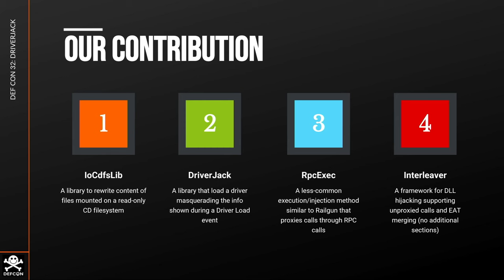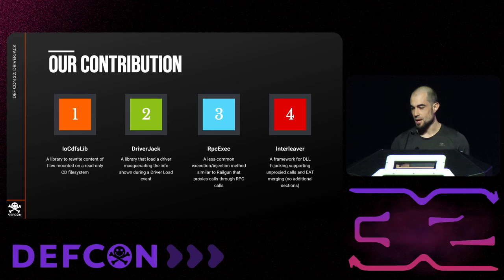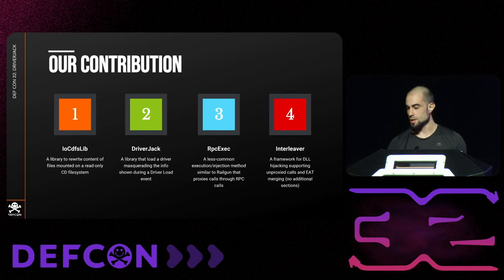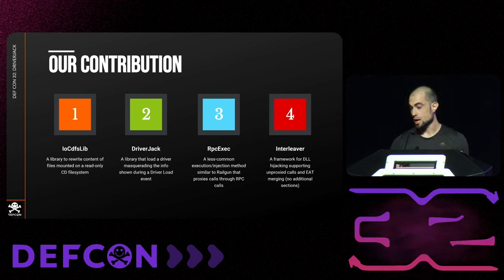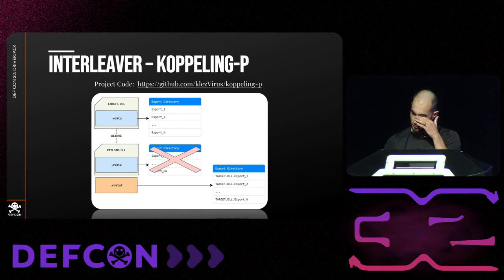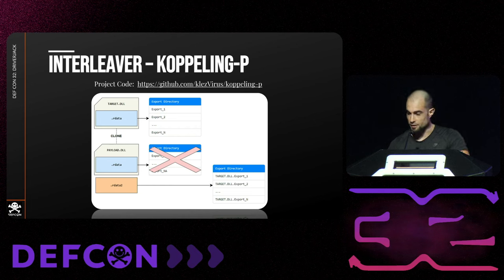We ended up creating a framework of four libraries. Two are the core of this presentation: IOCDFS and DriverJack, used to load a driver on Windows. The other two are collateral projects: RPC Exec, a less common way to execute code on local or remote processes without requiring RX memory allocation in the target process; and Interleaver, a PE manipulation library. I'll share a simpler POC called CouplinP on my GitHub page — it's a short version of Interleaver and an extension to what Nick Landers implemented back in 2020.